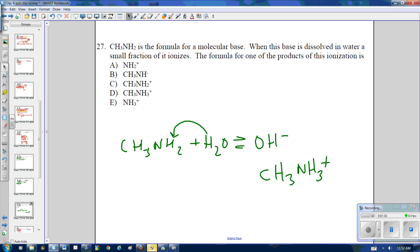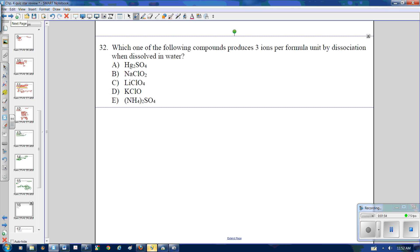So what you end up with is you end up with OH- as a product and CH3NH3+, because you're adding a single H to it. So when it says one of the products of this ionization, you're looking for CH3NH3+, the correct answer is D. It goes back to acid-base reactions.